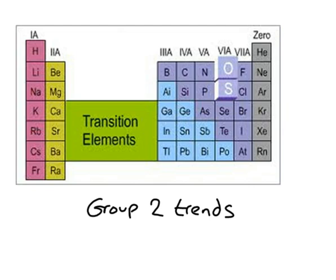So we're talking about group two. We've just talked about the fact that thermal stability increases as you go down the group because of the high charge density of the elements, of the atoms, at the top of the group.